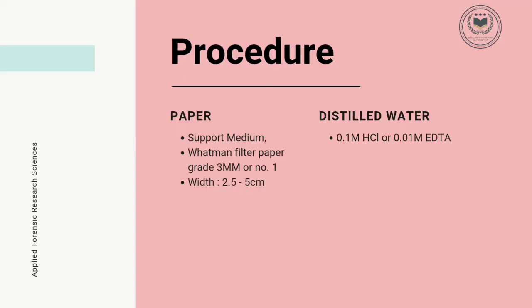Next is the procedure. Paper is used as the support medium. Whatman filter paper grade 3MM or number 1 are generally used. The width of the paper is 2.5 to 5 cm with suitable length so that both ends of the paper strip touch the buffer solution. Prior to use, paper is washed with distilled water followed by 0.1M HCl or 0.01M EDTA to remove impurities.